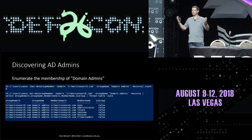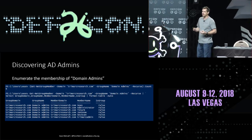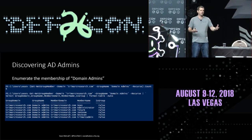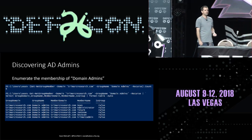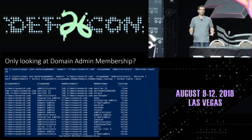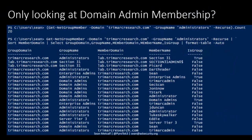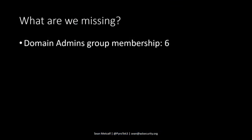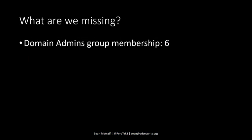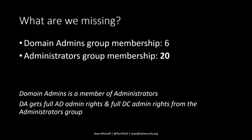The evolution of admin discovery: we look for domain admins using commands like Get-NetGroupMember from PowerView. But a lot of pen testers and red teamers forget about the Administrators group. If we're just looking at domain admins, we'll miss a ton of AD administrators. In most environments we get maybe six domain admins, but once we enumerate the Administrators group we might find 20 or more — and they have full AD admin rights as well as full domain controller admin rights.